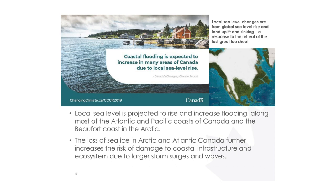Another implication of a warming climate is sea level change. Global sea level changes from two main causes. First, as ocean water warms, it expands, and that increasing volume results in the global ocean surface rising. Second, melting of ice currently stored on land — mountain glaciers and the large ice sheets of Greenland and Antarctica, both of which are losing ice — flows into the ocean and adds volume, also leading to sea level rise.